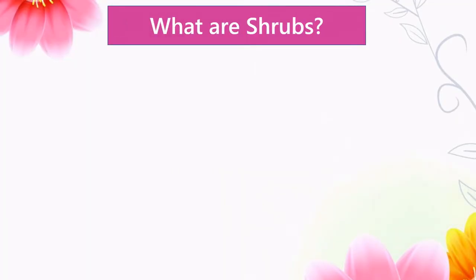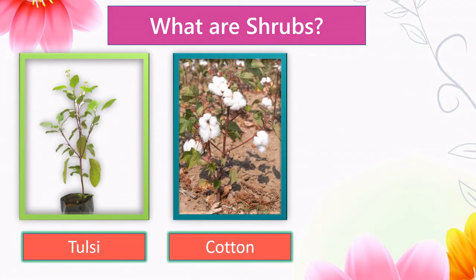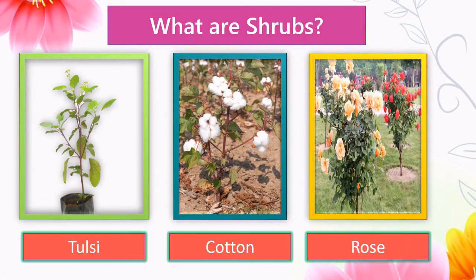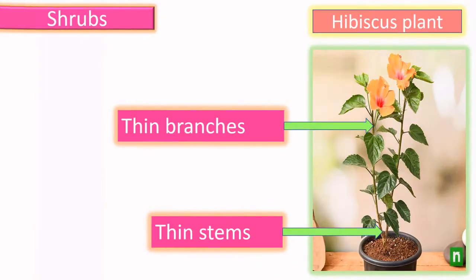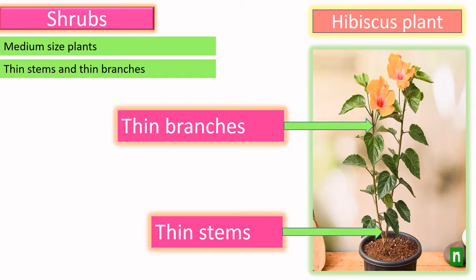What are shrubs? Let us see some examples: tulsi plant, cotton plant, rose plant. Compared to trees, shrubs are medium-sized plants. Let us look at the example of hibiscus plant — it has thin branches and thin stems.